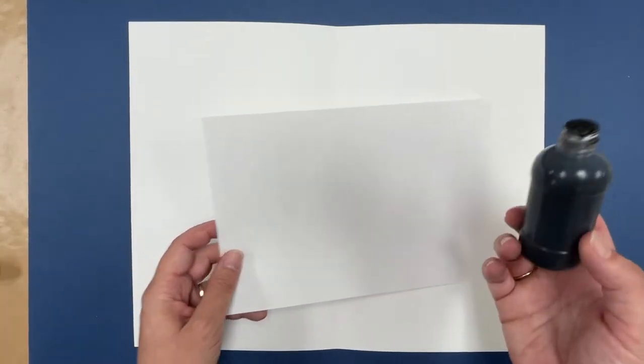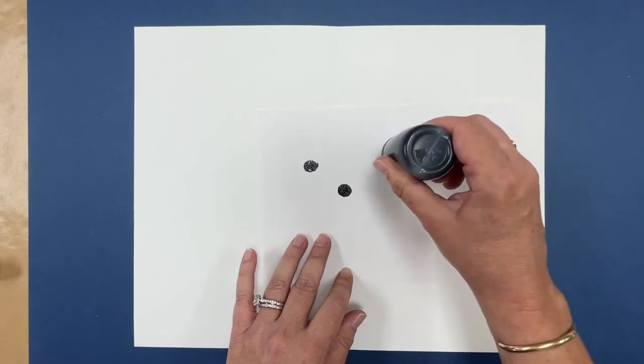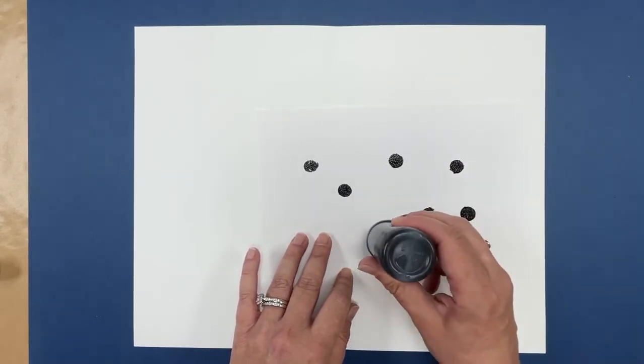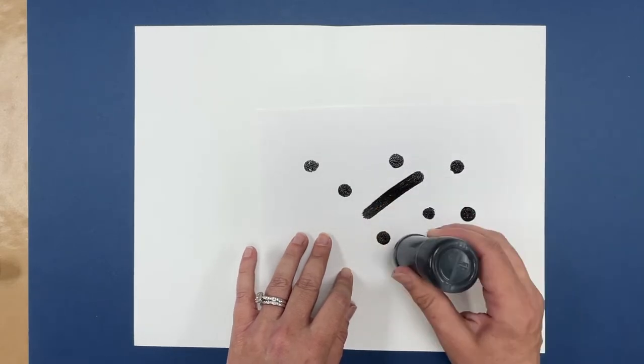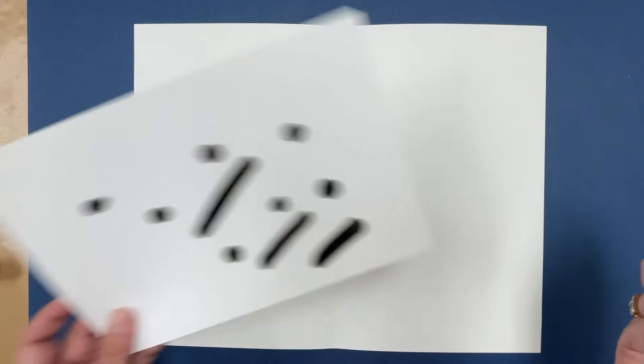So one thing I like to do before letting the students draw their butterfly is letting them practice on a piece of paper. You have to kind of gently squeeze to get it to come out. But they need to see about the pressure. So you may want to let them run a few lines first just to make sure that they know how to do it.